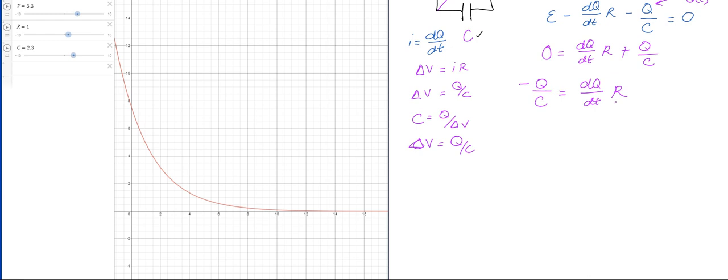Now what I'm going to do is move the Q over to this side and move the dt over to this side. So I'll do dt equals...